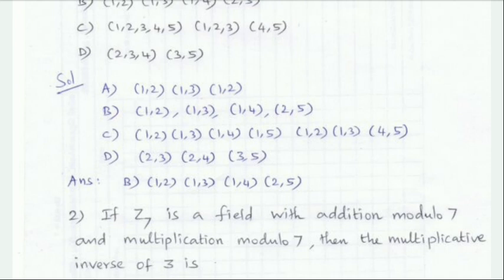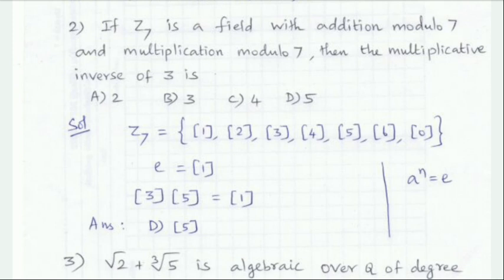In D option, we have transpositions. When adding transpositions, in B option, we are accepting 4 transpositions — that makes it even. The answer is C, which is even.